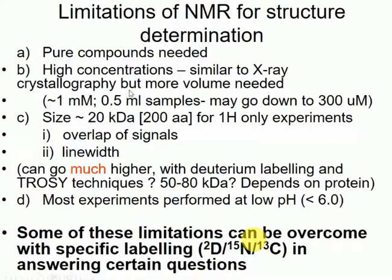But the samples are 0.6 mils. You need the same sort of concentrations as you need for X-ray, but you need a heck of a lot more of it. On the other hand, you don't need crystals. So by the time you've wasted all your crystal trials, you could have done an NMR experiment.